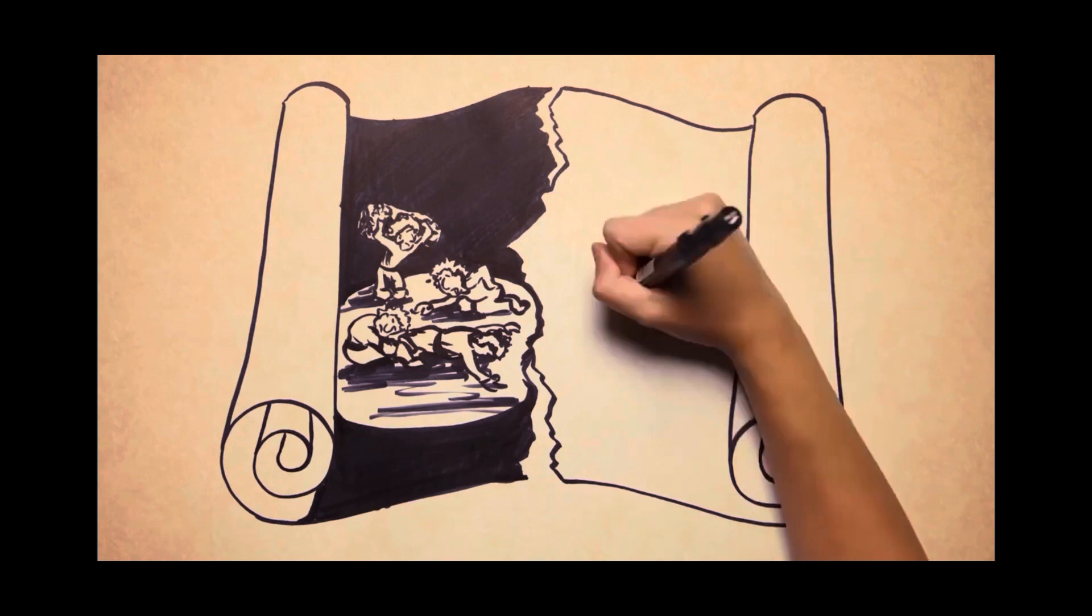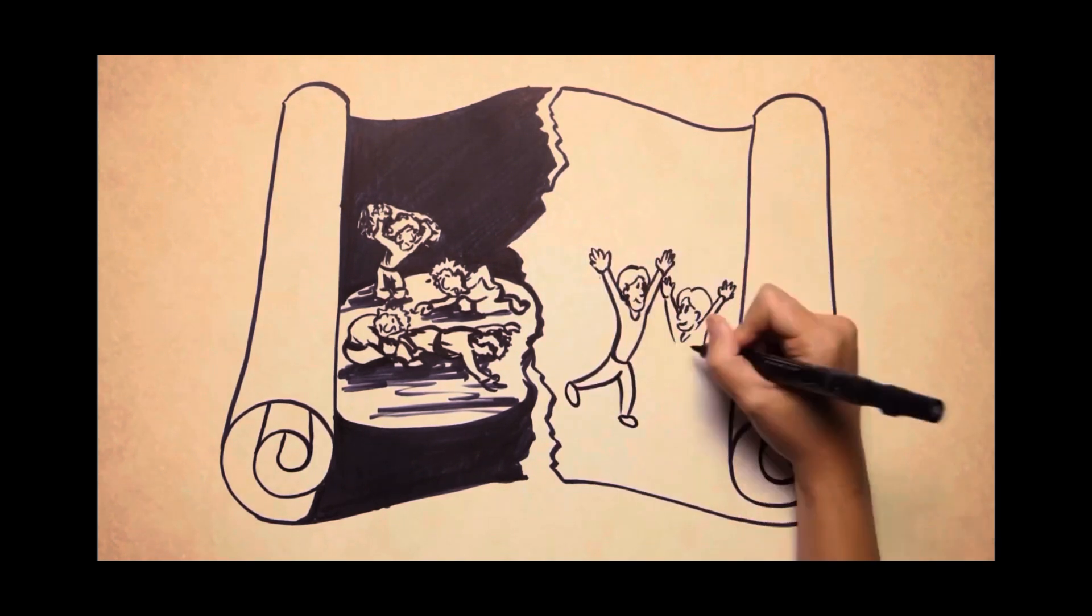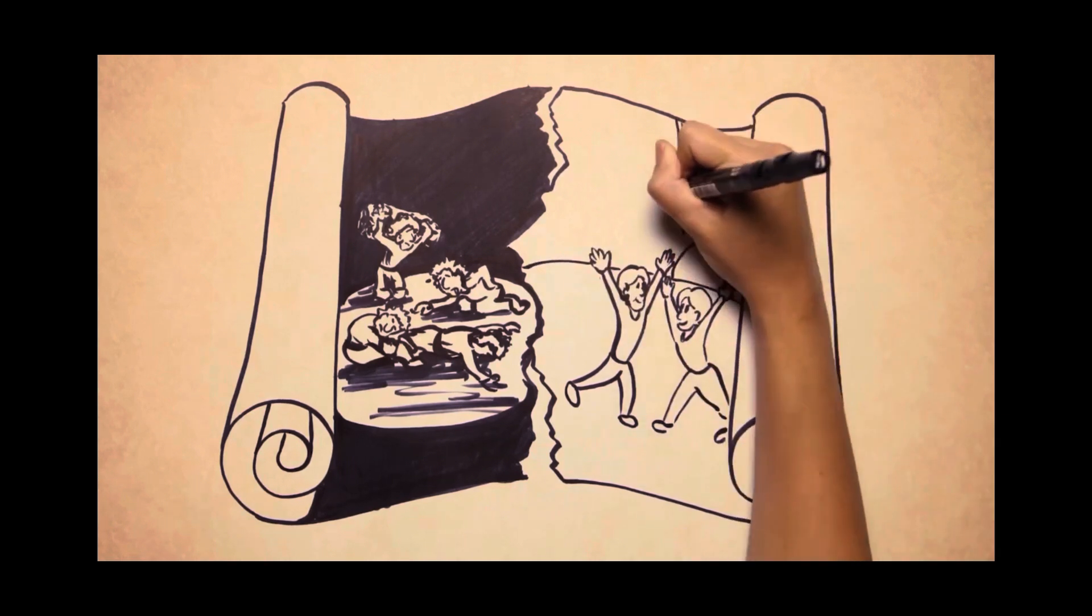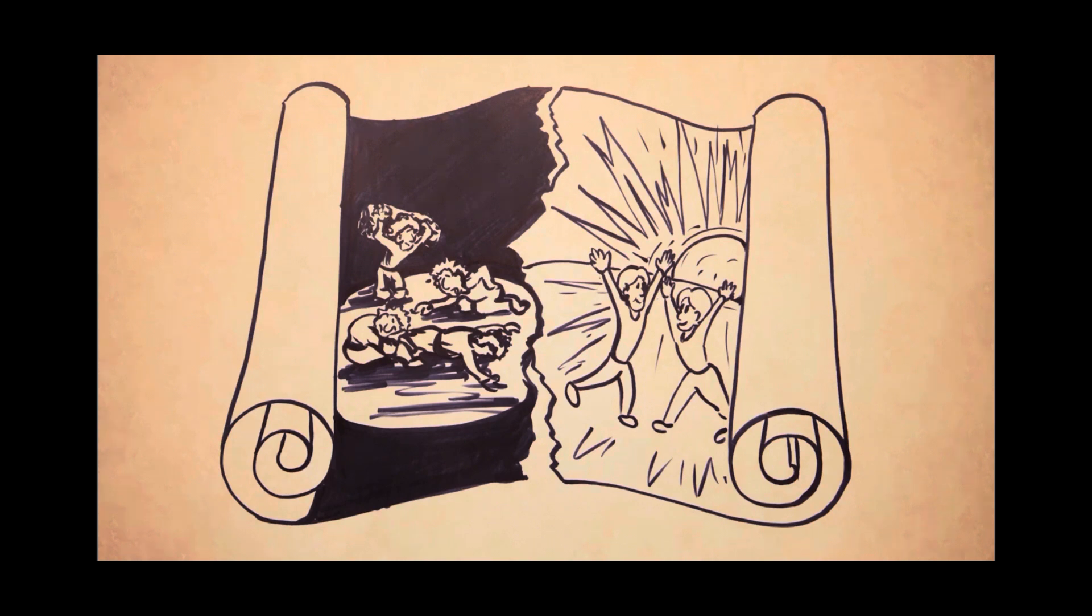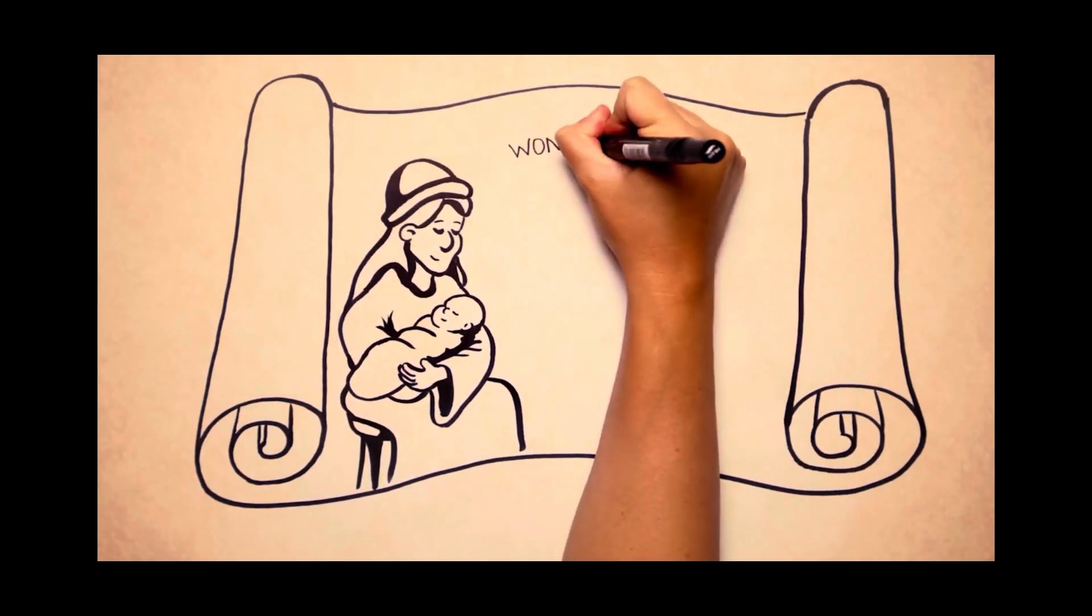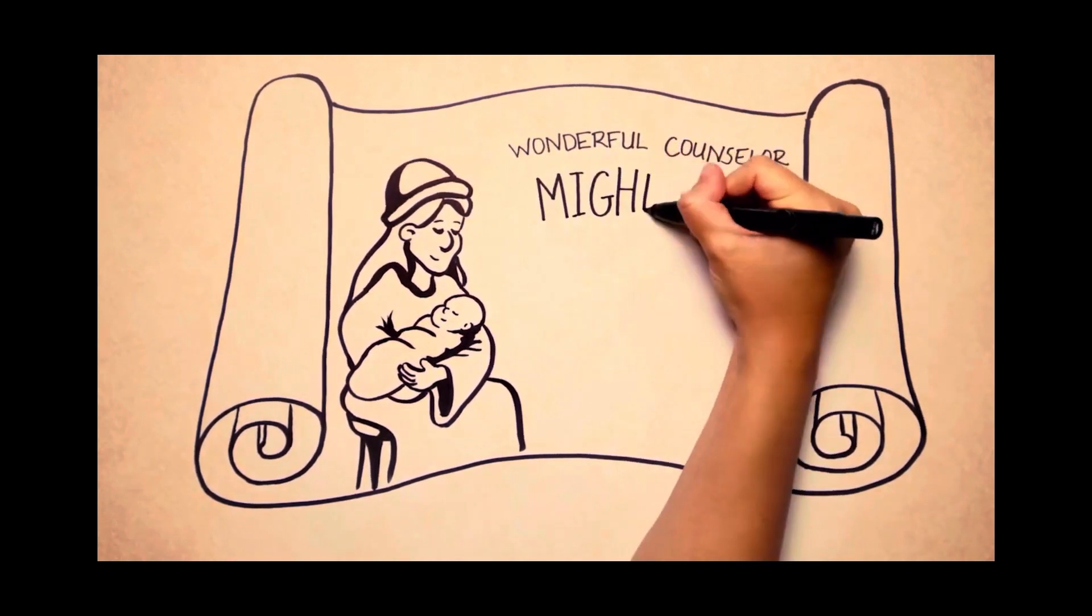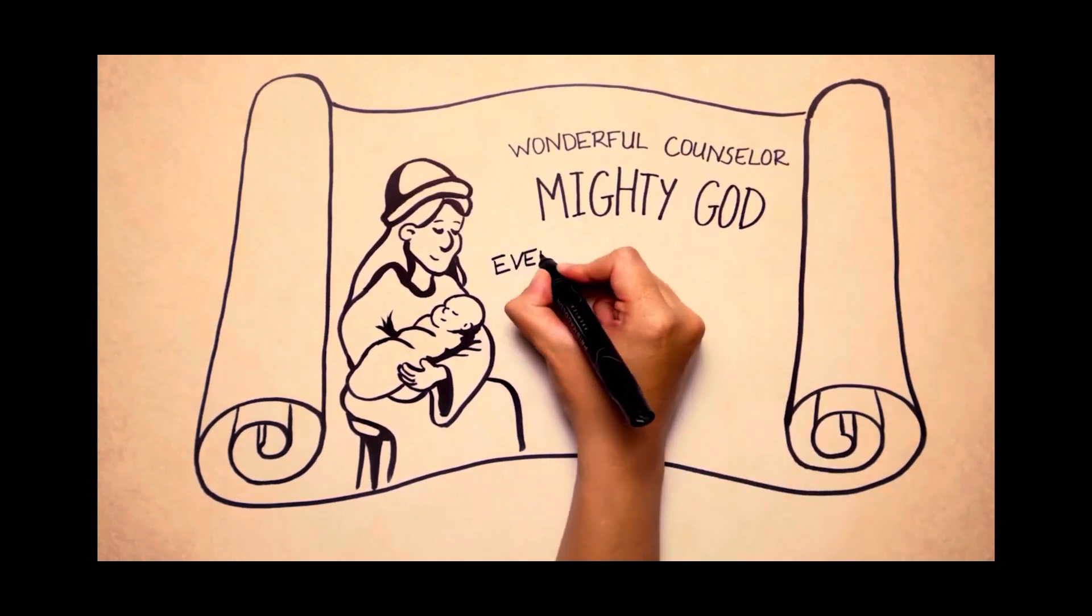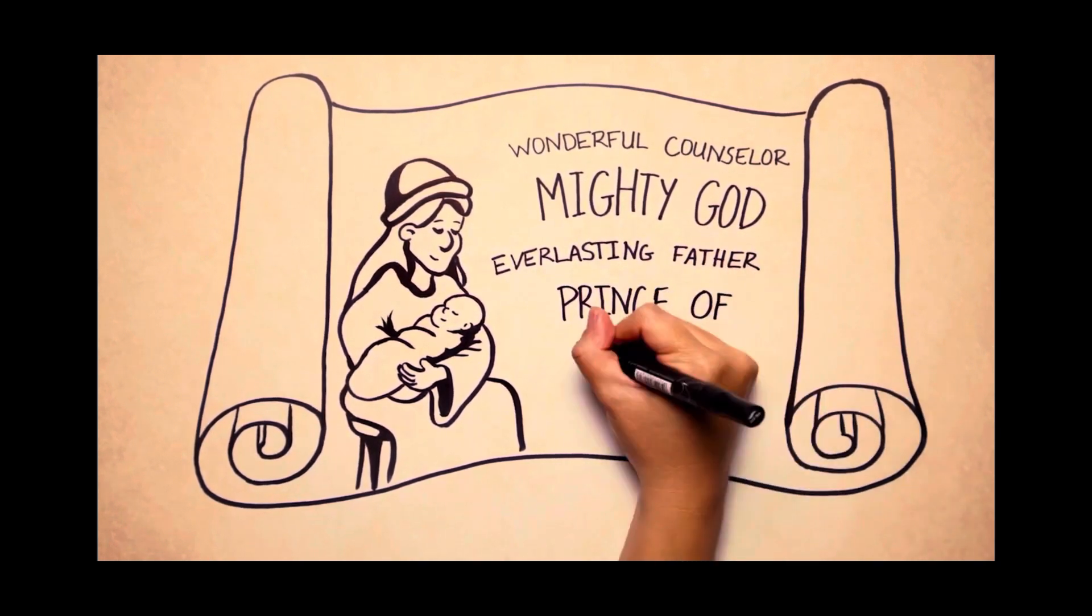And then there will be celebrating like a great victory party all over the world. For unto all of us a child will be born, to us a son will be given, and that child will be greater than all kings forever. His name will be called Wonderful Counselor. This child is the mighty God. He is the everlasting Father, the Prince of Peace.